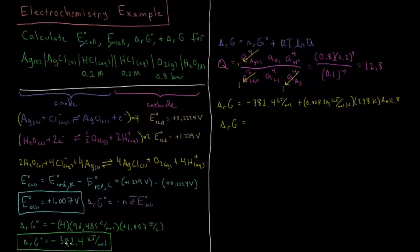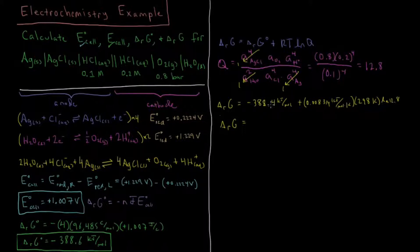After correcting a misread value, ΔrG of reaction comes out to −388.6 kJ/mol. The lesson here is to read the right value off your notes.